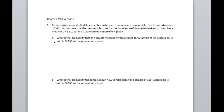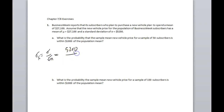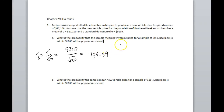The first thing I'm going to do is figure out what our sigma x-bar is. From our formula, that's just sigma over the square root of n. Sigma is defined as 5,200 and n is the sample size, so it's the square root of 50. That gives us sigma x-bar equal to 735.39.